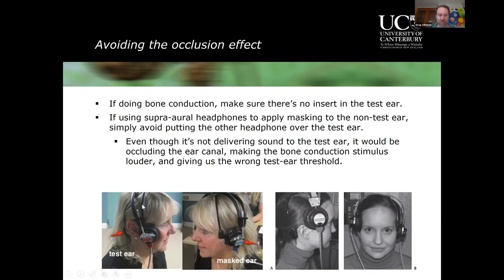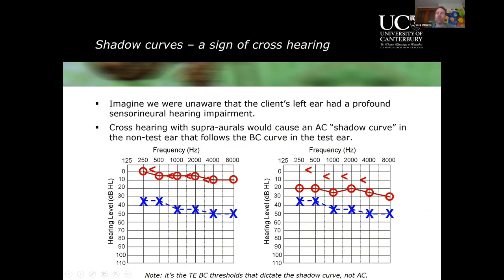There are pictures showing the supra-aural headphone on the left ear presenting masking noise, while the ear being tested with bone conduction is left open. One sign to look out for on a completed audiogram indicating cross hearing has occurred is something called a shadow curve.